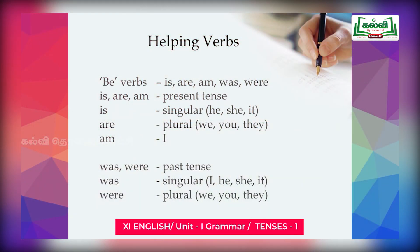Next, be verbs. There are five be verbs: is, are, am, was, were. The first three — is, are, am — are present tense, and was and were are past tense. 'Is' is used for singular subject, 'are' is used for plural subject, and 'am' is separately used for the pronoun 'I.' For past tense, 'was' is used for singular subject and 'were' is used for plural subject.